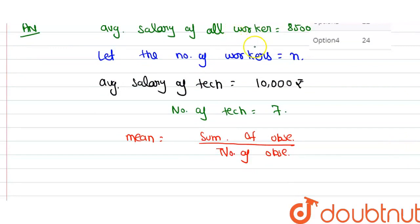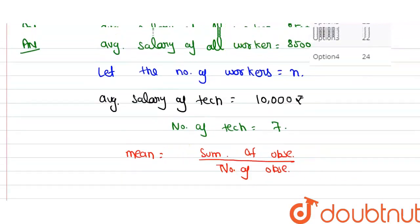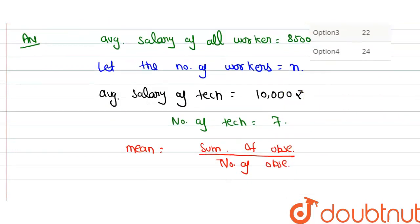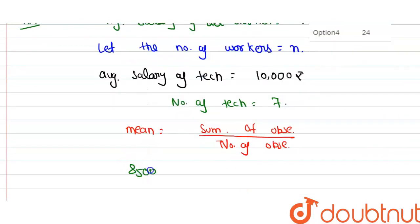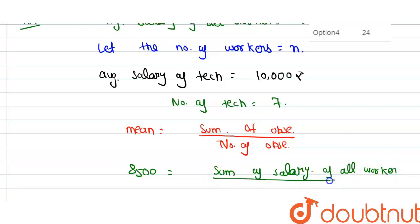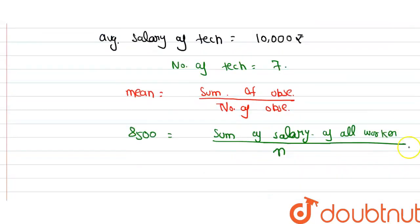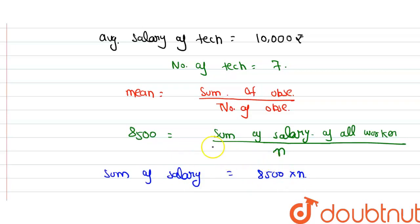तो देखो यहाँ से value क्या आएगी? हम निकालते हैं mean सभी workers का — सभी workers का mean हमें दिया हुआ है 8,500. So, 8500 = sum of salary of all workers / N. तो यहाँ से sum of salary of all workers की value आएगी: that is 8,500 × N. यह हमारा equation number 1.